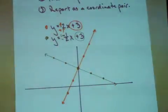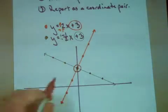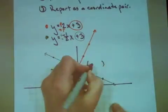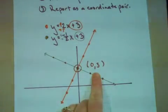The last thing I need to do is identify my point of intersection. Both of my lines meet right here. That happens to be at the coordinate pair 0, 3. So my point of intersection is the point 0, 3.